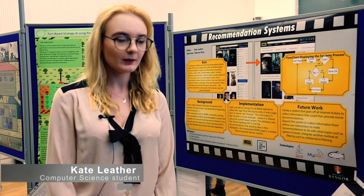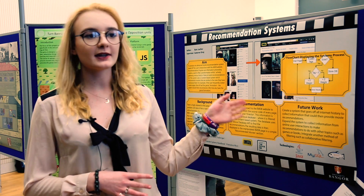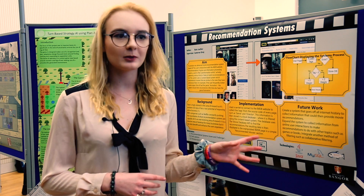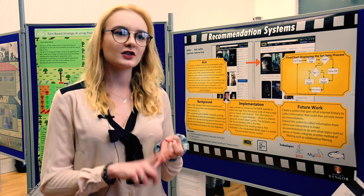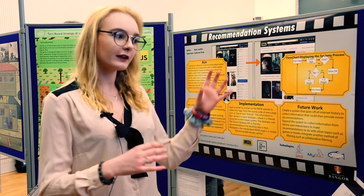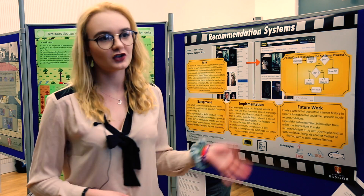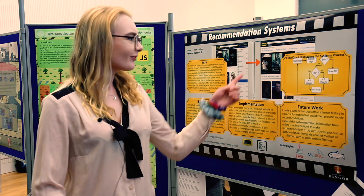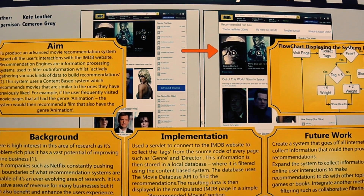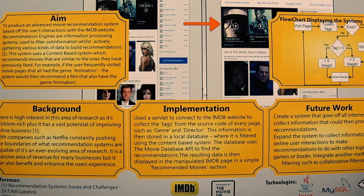It's a movie recommendation system that basically collects data off the IMDb website while users are using it. If you visit a lot of Disney films it will collect the directors, genres, and actors in those films, then filter that information and send you films you should watch based on what you've been on before. In this case they've visited a lot of animations, so you get things like Tangled and The Incredibles — films they've not yet clicked on but will probably want to watch.